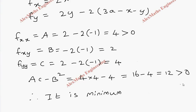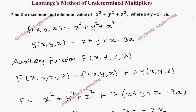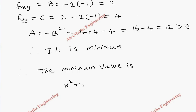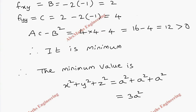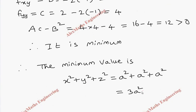We conclude that the function has a minimum at the stationary point (a, a, a). To find the minimum value, we substitute into x² + y² + z²: the minimum value = a² + a² + a² = 3a². Within the given condition, there is no maximum value — only the minimum value of 3a².